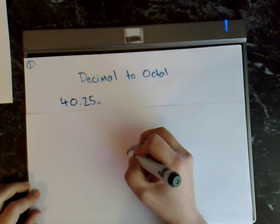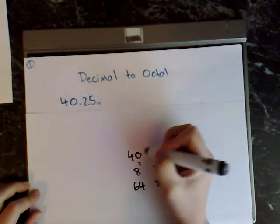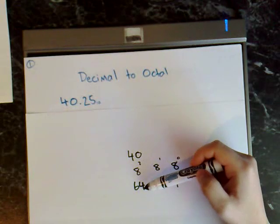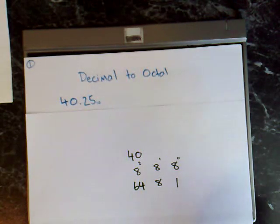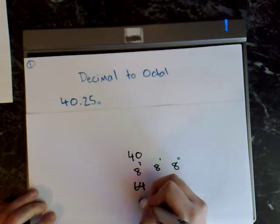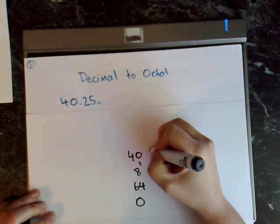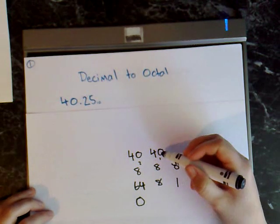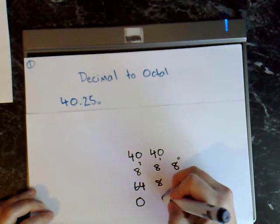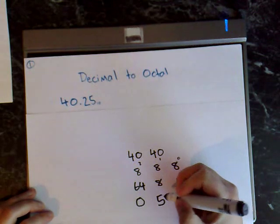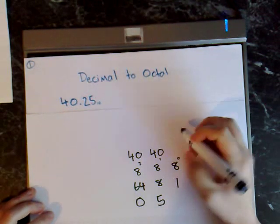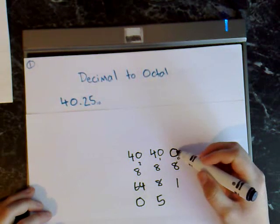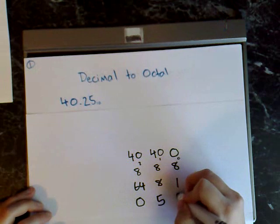The next step is to write 40 above this last column. Then you ask how many times does 64 fit into 40 — it doesn't, so you put a zero there and bring the 40 across. How many times does 8 perfectly fit into 40? It fits 5 times. Then you write the remainder above the next column — the remainder is 0, so 0 divided by 1 is 0.